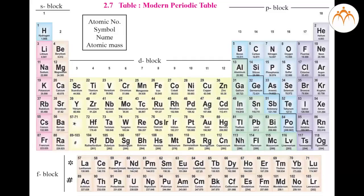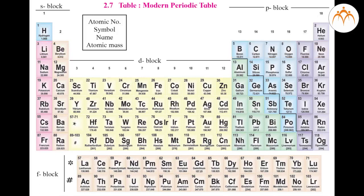If we look at a particular period — let's take the second period — we have the elements lithium, beryllium, boron, carbon, nitrogen, oxygen, fluorine, and neon. The valency goes on increasing from lithium to carbon such that it goes from one to four, and later on it goes on decreasing from four to zero from carbon to neon. That is because lithium has one electron in its outermost shell, the next element beryllium has two electrons in its outermost shell, boron has three, and carbon has four.